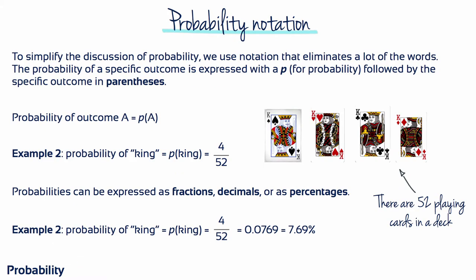To simplify the discussion of probability, we use notation that eliminates a lot of the words. The probability of a specific outcome is expressed with a P for probability, followed by the specific outcome in parentheses. For example, the probability of selecting a king from a deck of cards is written as P(King). There are four outcomes that can be classed as king — four cards that can be identified as kings in a deck: the king of spades, the king of hearts, the king of clubs, and the king of diamonds.